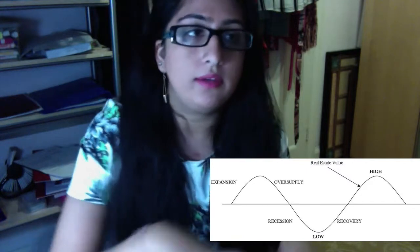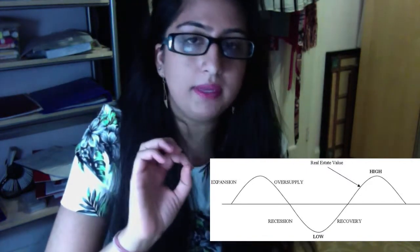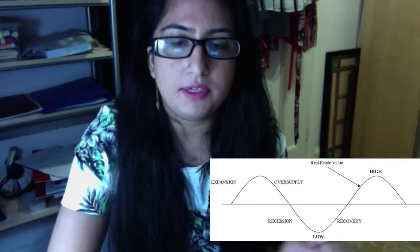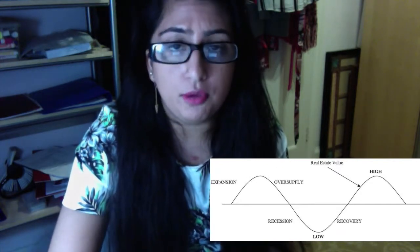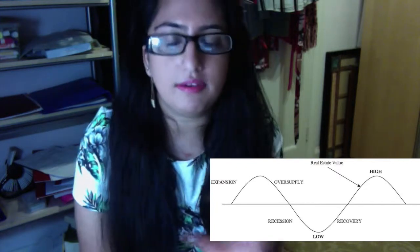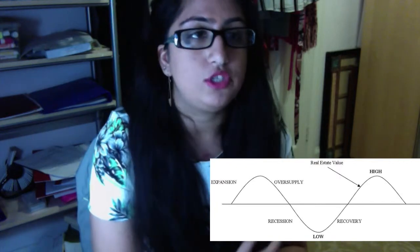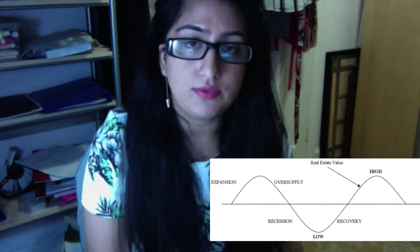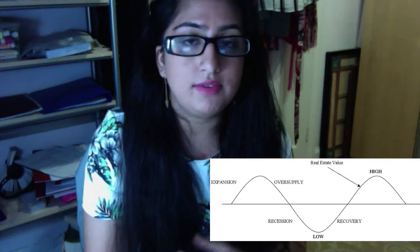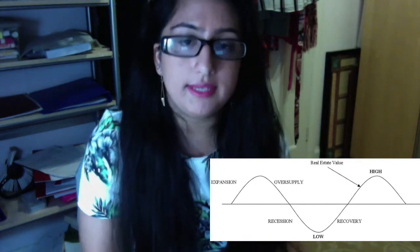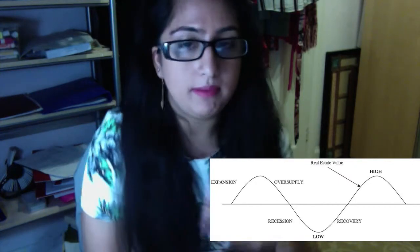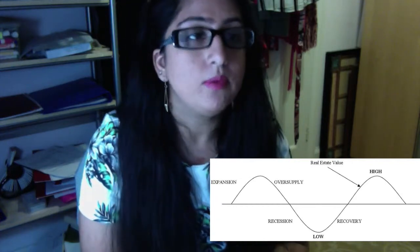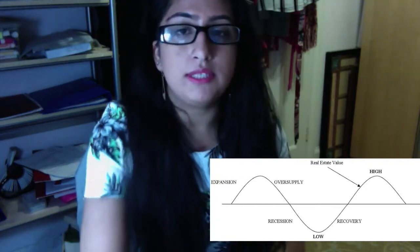And then we have the cycle all over again. Now, what's happening in the adjustment period between the low point and the oversupply point is something also called an adjustment. And it's in the diagram where it says recession, that section here. What's happening here is that demand is falling and supply is increasing and vacancy rates are going up and rents are going down.